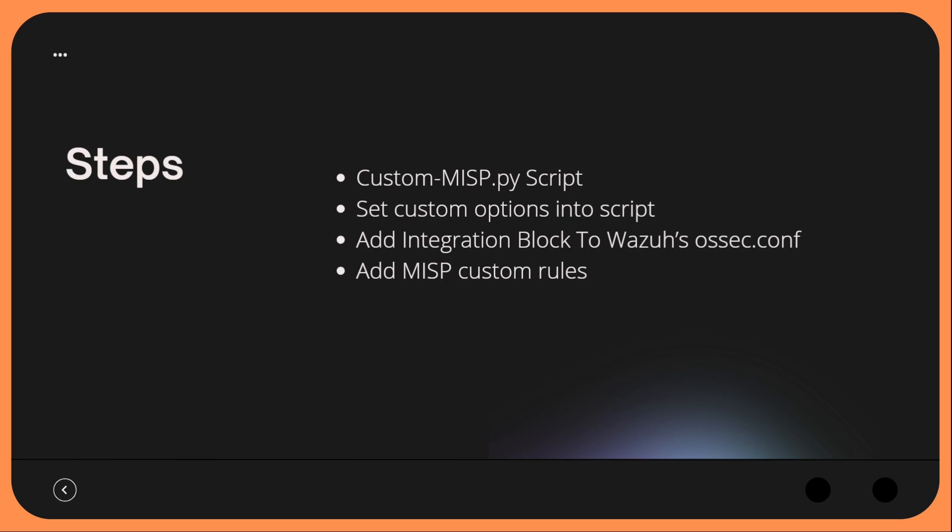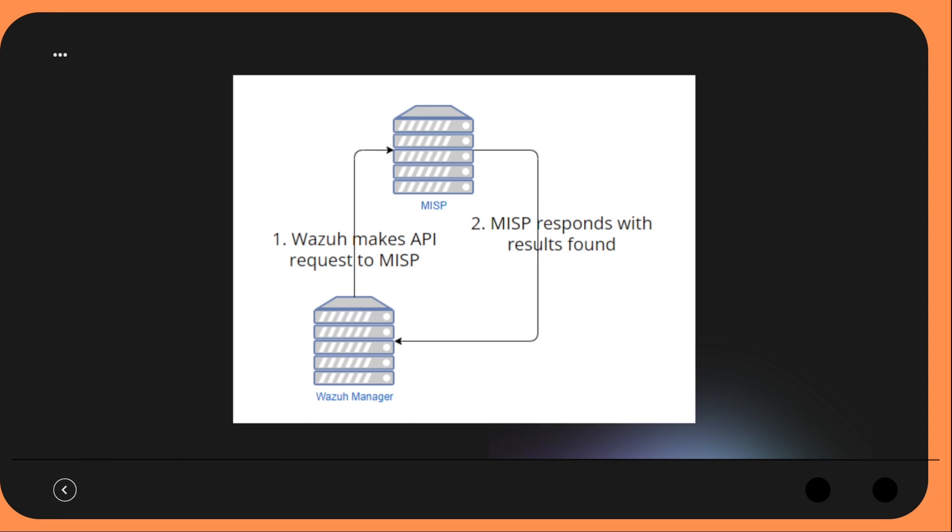The steps for this video: we are going to configure our custom misp.py script and set custom options into the script. We'll add our integration block to Wazuh's ossec.conf so we can invoke the script, and then we'll add our MISP custom rules to tell Wazuh when MISP has responded with a positive hit. We can then escalate that rule level to a high severity level to get our analysts' eyes on it.